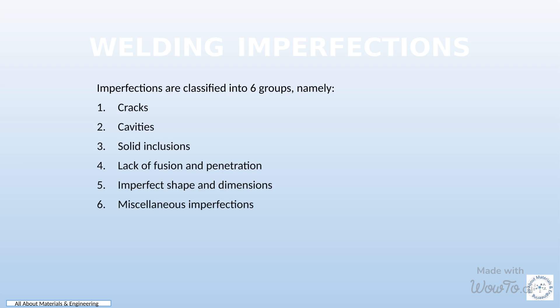These imperfections can be classified into six main groups. Firstly, cracks refer to the separation of material due to stress or other factors. Cavities are voids or empty spaces within the material. Solid inclusions are foreign materials embedded in the main material. Lack of fusion and penetration occurs when the joining or bonding of materials is incomplete.